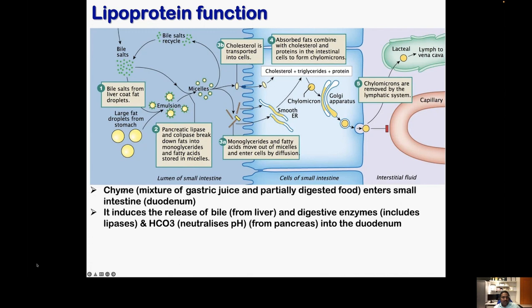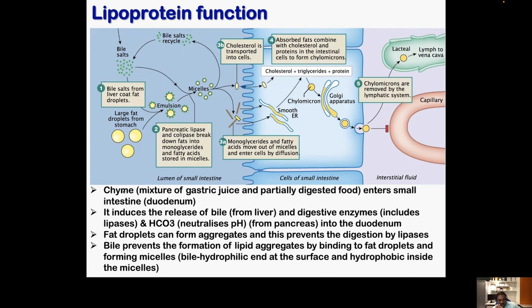In the duodenum, when the chyme enters, we get digestive enzymes from the pancreas and bile from the liver. Fat droplets will be formed after mixing with gastric juice. Because they are non-polar in nature, they can aggregate and make simple aggregates. These aggregates are really difficult to digest by enzymes because enzymes are hydrolytic in nature — they are hydrophilic and can't access the fat molecules.